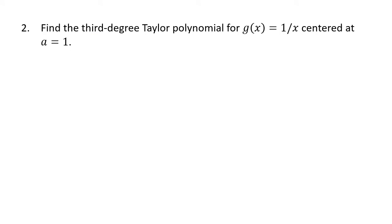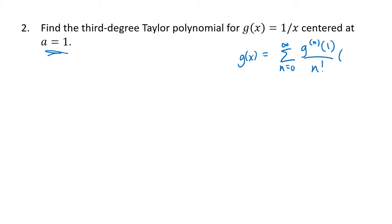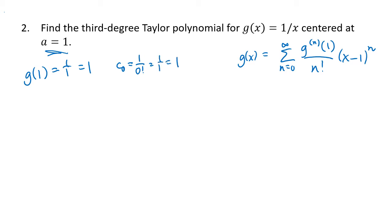Similar problem: third degree Taylor polynomial, but now centered at a=1. For g(x) = 1/x, we use the formula with x minus 1 to the n. Plugging the center into the function: g(1) = 1/1 = 1, so c0 = 1/0! = 1. The first derivative is g′(x) = −1/x². Plugging in 1 gives −1, so c1 = −1/1! = −1.